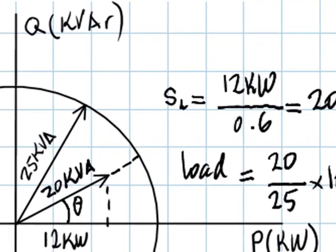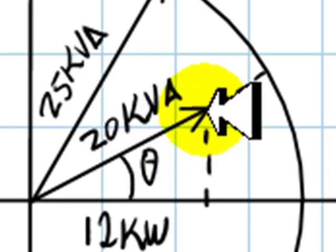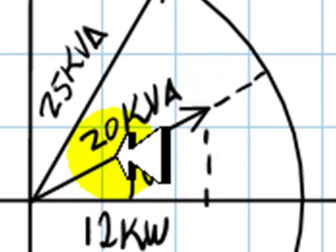Now the second part of the question is, how many more kilowatts of resistive load can we add without overloading that transformer? Well, the next load is going to be only kilowatts. It's going to be resistive and will be added to the current load.